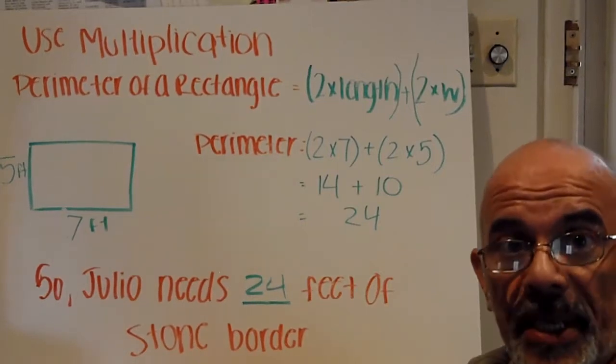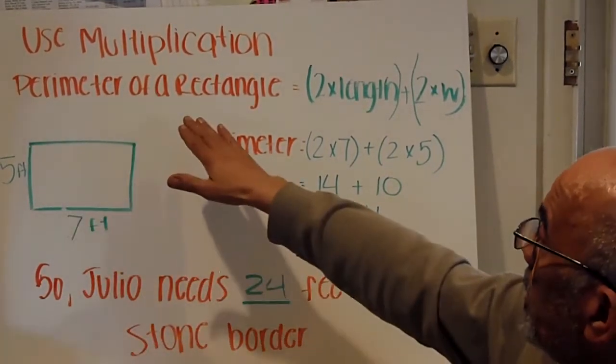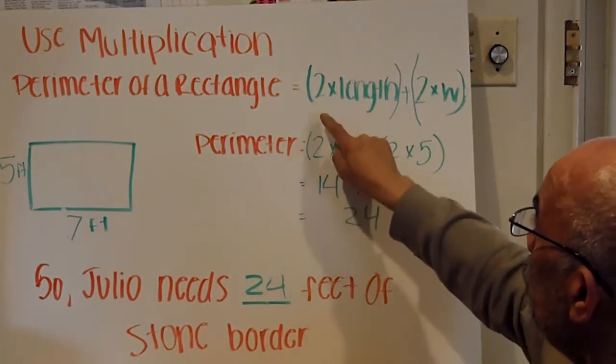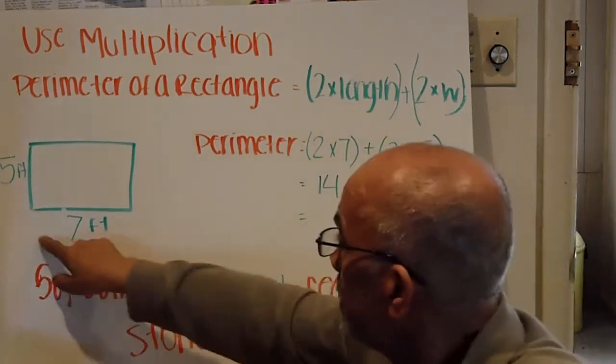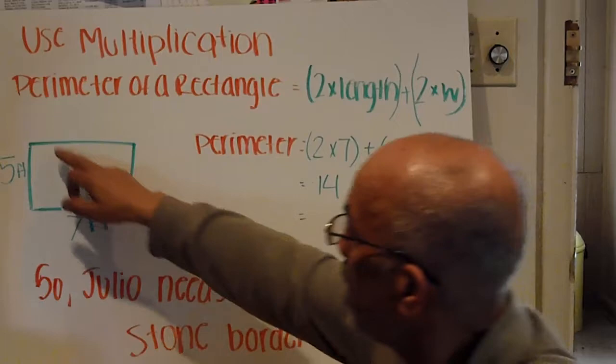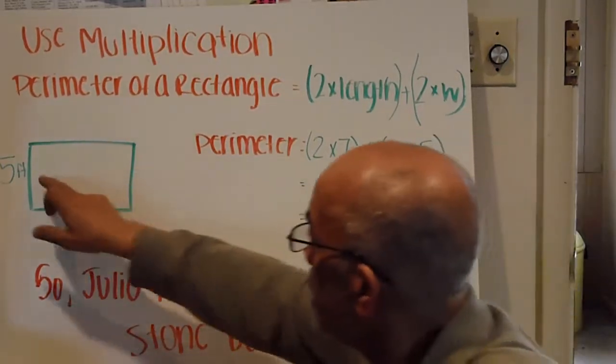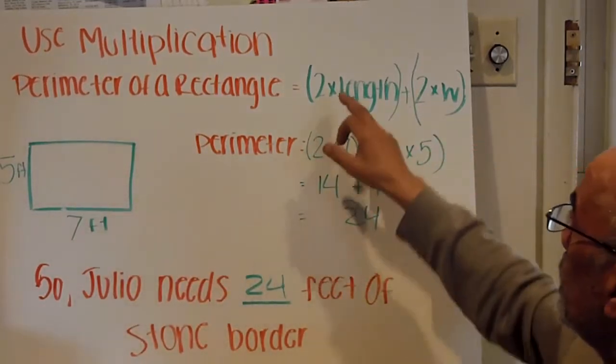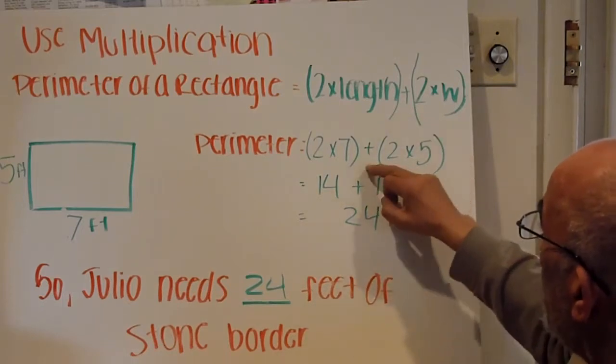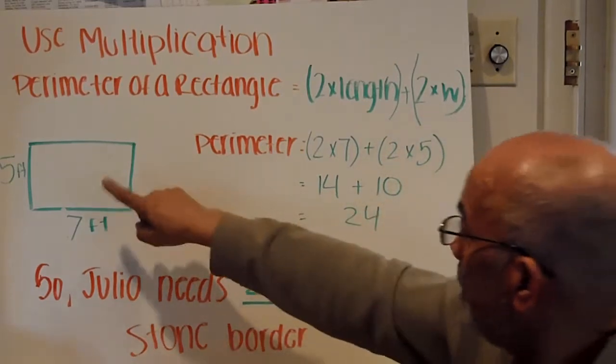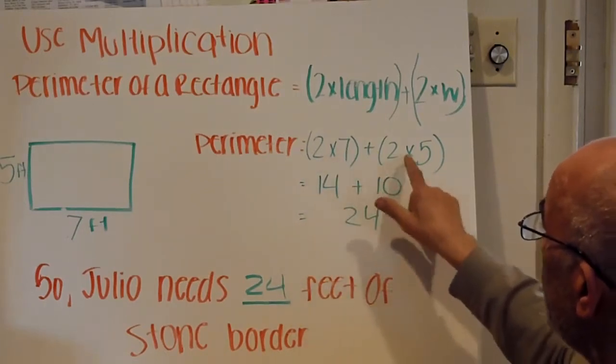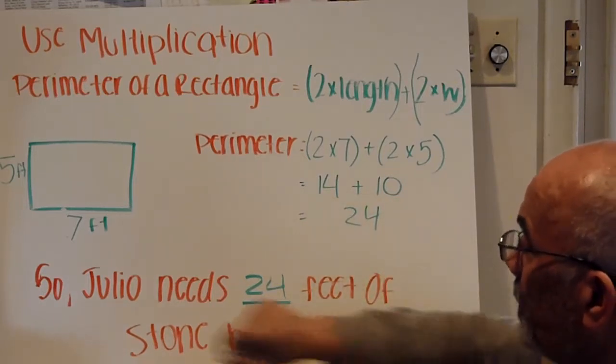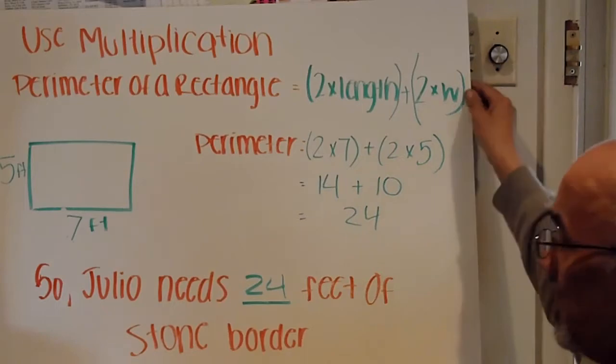There's also a multiplication formula. When we use the multiplication formula, perimeter equals two times the length plus two times the width. These two sides are the same. These two are the same. So, two times length, two times width. Two times seven plus two times five, two times seven is fourteen, two times five is ten. Ten plus fourteen equals twenty-four. So, Julio needs the same 24 feet of stone border.